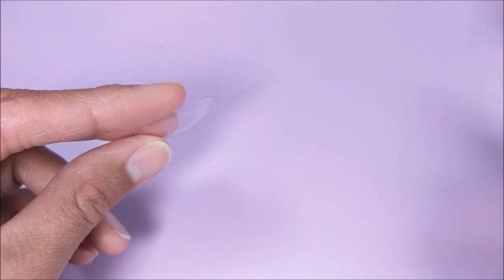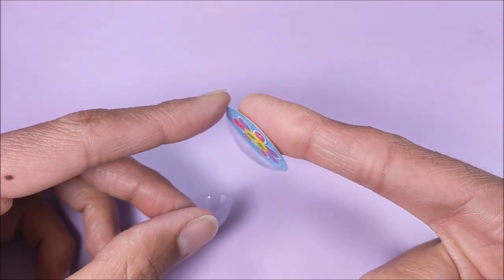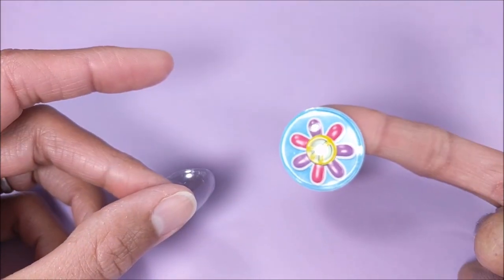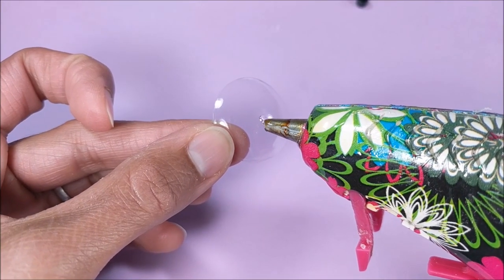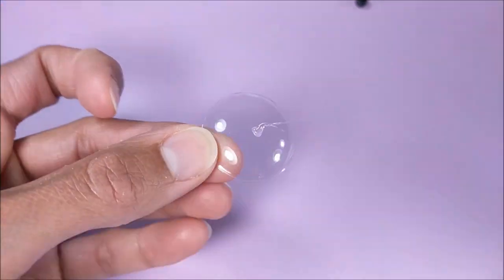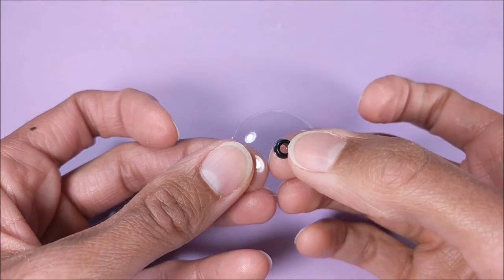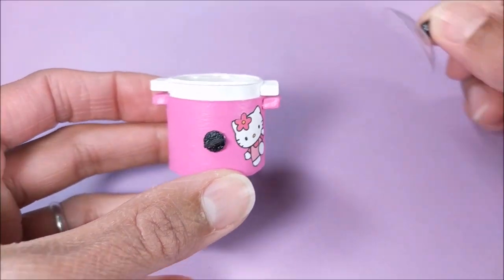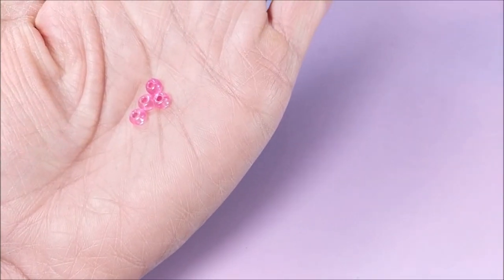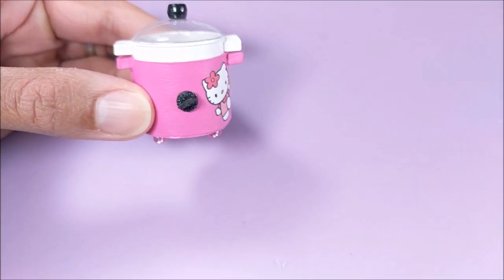For the lid, I'm just using the plastic that comes on puffy stickers. You might try the plastic from googly eyes. Add a bead to the top, some tiny beads to the bottom, and your crock pot is good to go.